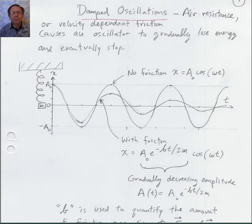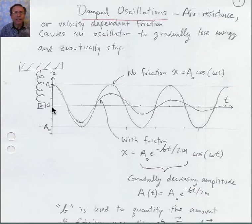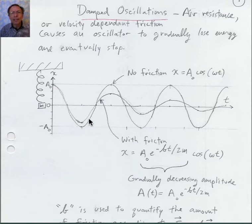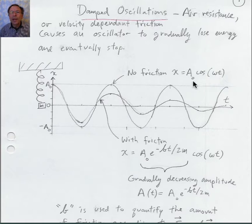Now let's take a look at the notes. Here's my oscillator bouncing up and down. I'm not including gravity in any of this discussion — it's just the spring and the mass. Without friction, the motion of the mass is described by the usual formula: A cosine(ωt).